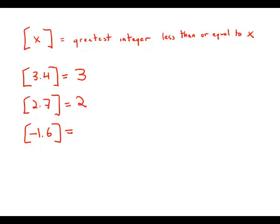For negative 1.6, the largest integer that is smaller than it is negative 2. Remember, negative 2 is smaller than negative 1.6. Negative 1 would actually be larger than negative 1.6. So the third one equals negative 2.